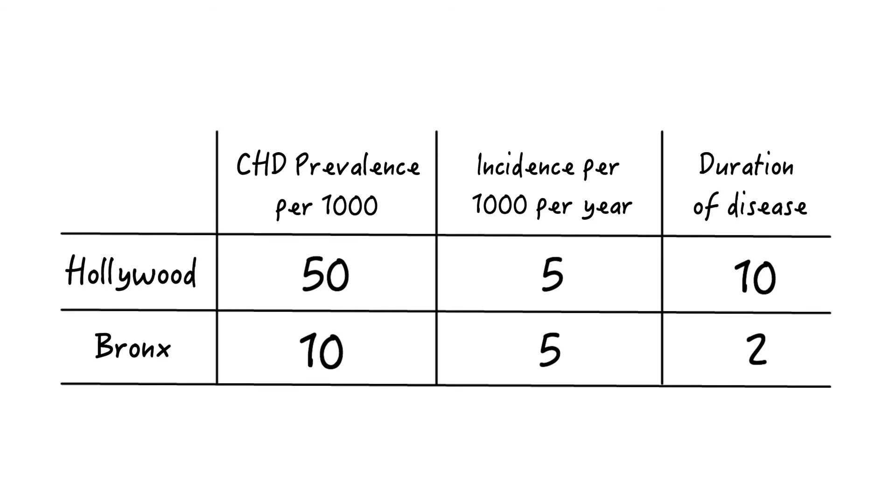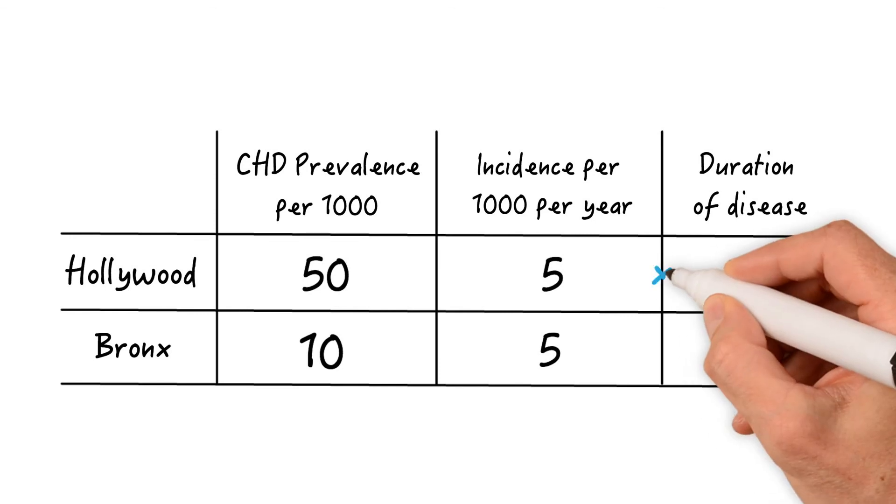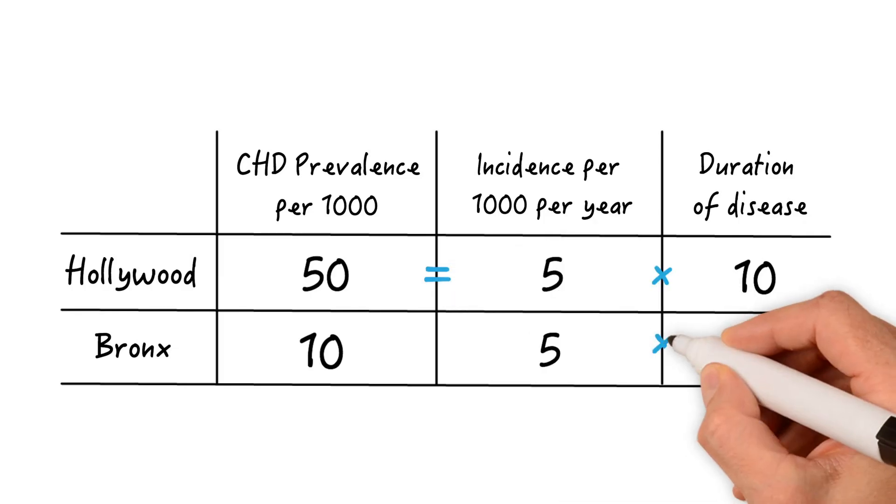You see, we said prevalence is equal to incidence times duration. So 5 times 10 is 50 and 5 times 2 is 10.